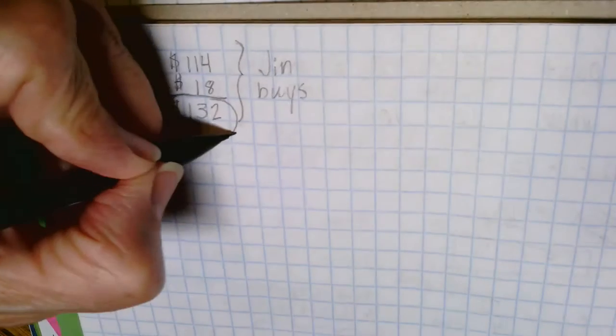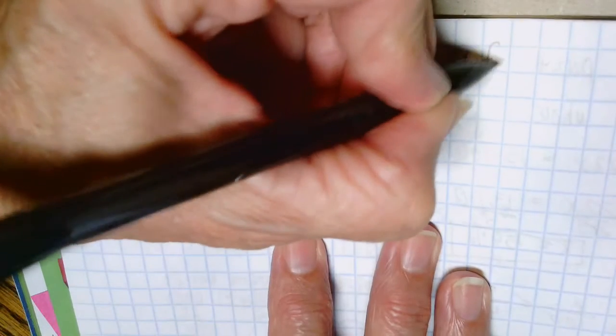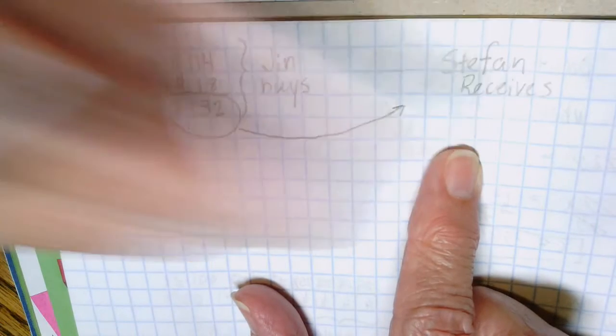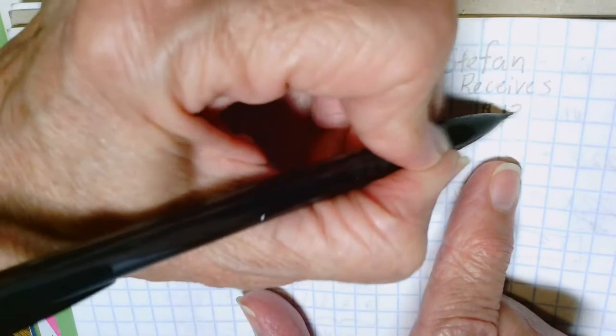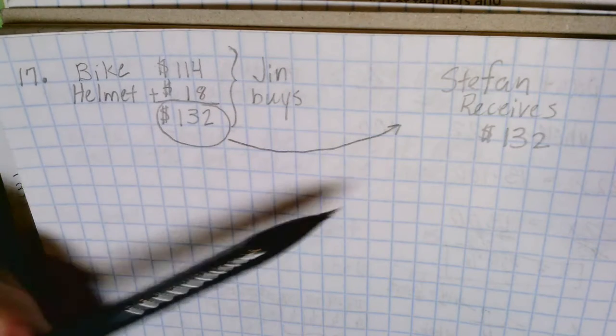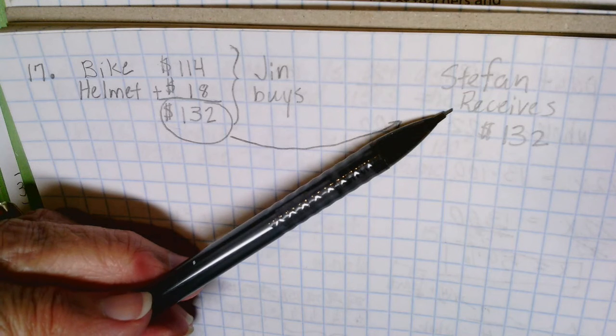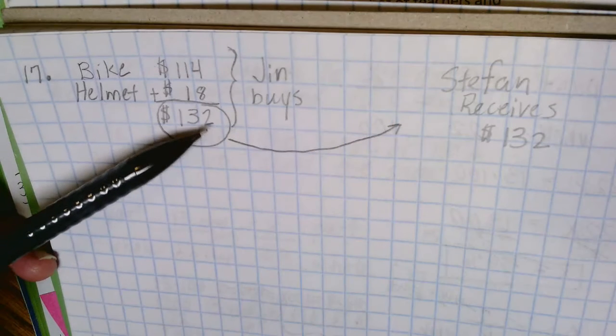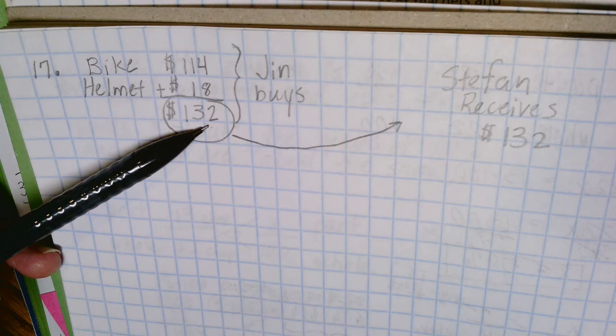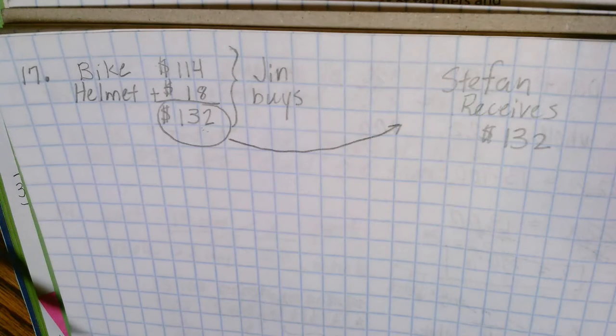Jin has to pay Stefan this money. Stefan receives Jin's money, he receives the $132. Now Stefan had this bike previously and he had purchased it previously, and we're told that the price that Jin paid, the $132, is 120% of what Stefan originally paid for the bike.